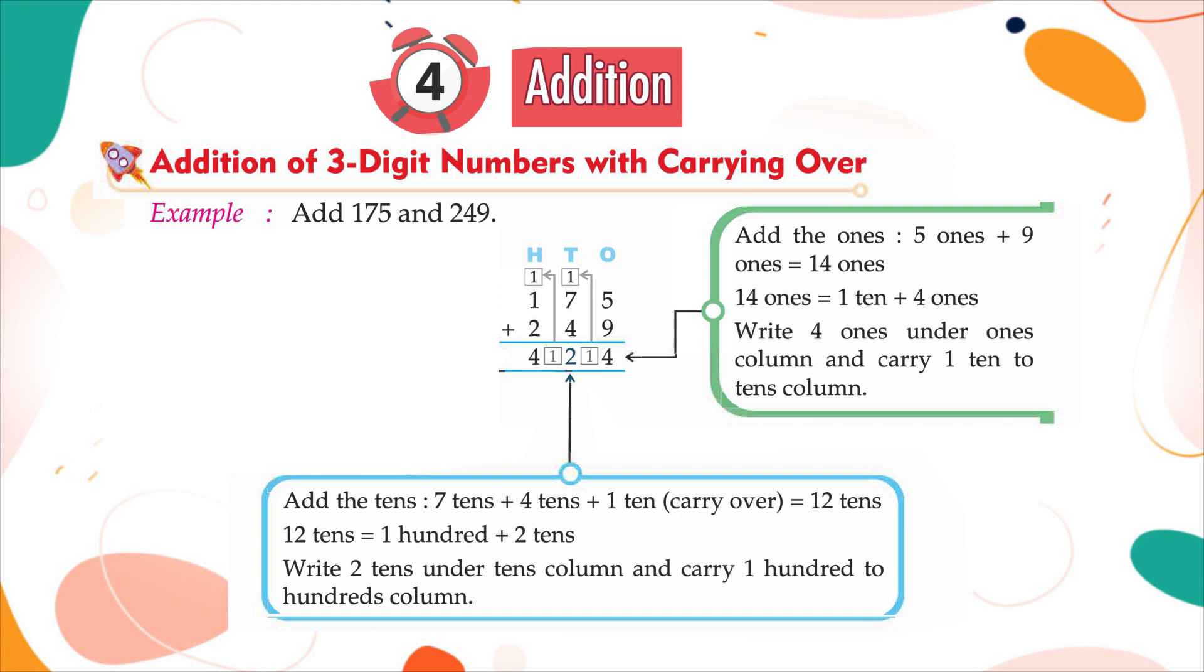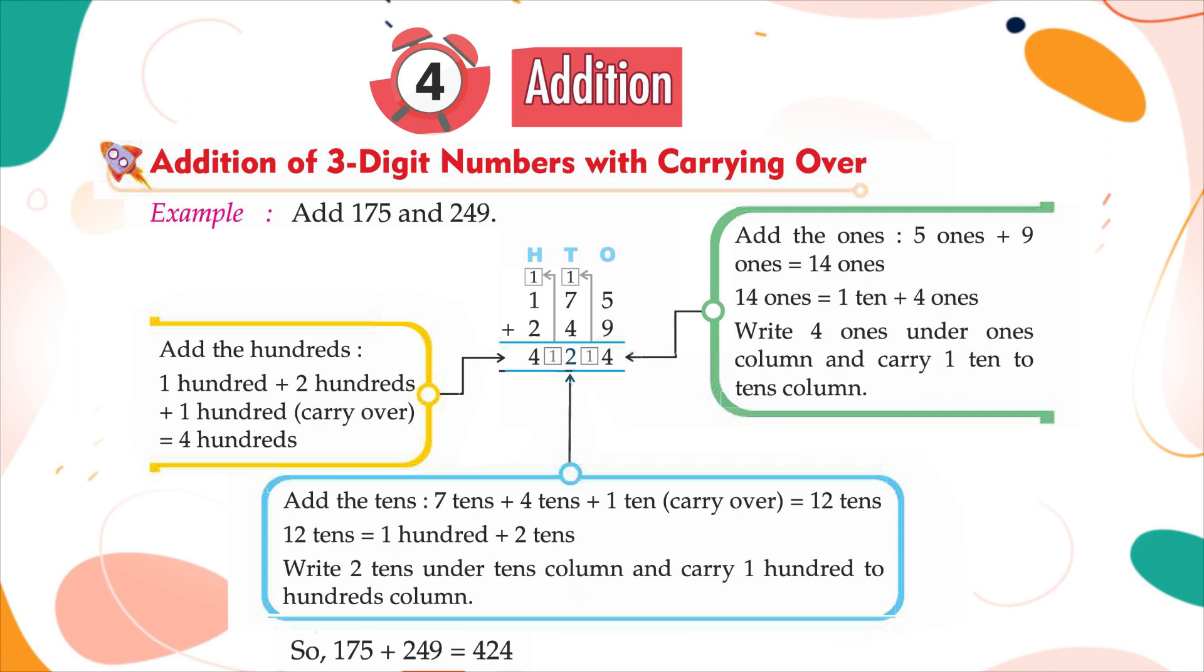Write 2 tens under 10's column and carry 1 hundred to 100's column. Add the hundreds: 1 hundred plus 2 hundreds plus 1 hundred carry over is equal to 4 hundreds. So, 175 plus 249 is equal to 424.